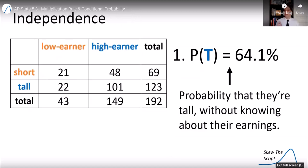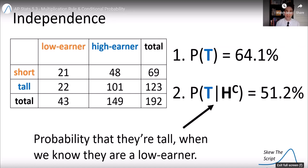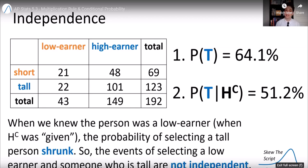So the probability of their tall, without knowing about their earnings, without a given, was 64.1%. However, when we were given that they were a low-income earner, the probability of them being tall lowered to 51.2%. So when we knew the person was a low-earner, the probability of selecting a tall person actually shrunk.